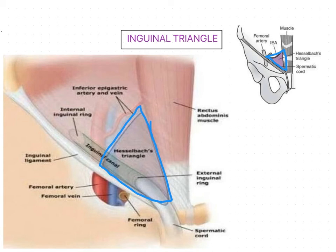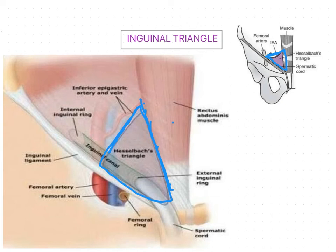Now we will see the boundaries of this inguinal triangle. Medially, it is related to the lower 5 centimeters of the lateral border of the rectus sheath. This is the rectus muscle, and here you can find its covering called the rectus sheath. That lower 5 centimeters of the lateral border of the rectus sheath is sometimes also considered as the linea semilunaris.